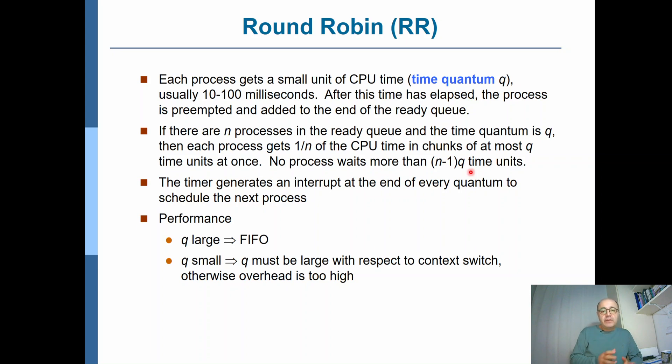If q is very small, then you will have so many context switches that the overhead of context switch will be too high. So it wouldn't be worth the effort. Therefore, it's important to adjust the size of the time quantum properly.